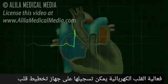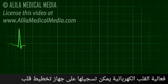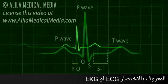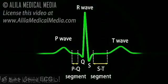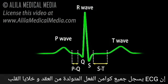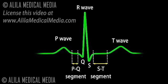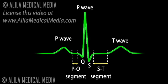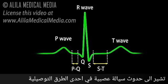Electrical activities of the heart can be recorded in the form of an electrocardiogram, ECG, or EKG. An ECG is a composite recording of all the action potentials produced by the nodes and the cells of the myocardium. Each wave or segment of the ECG corresponds to a certain event of the cardiac electrical cycle.